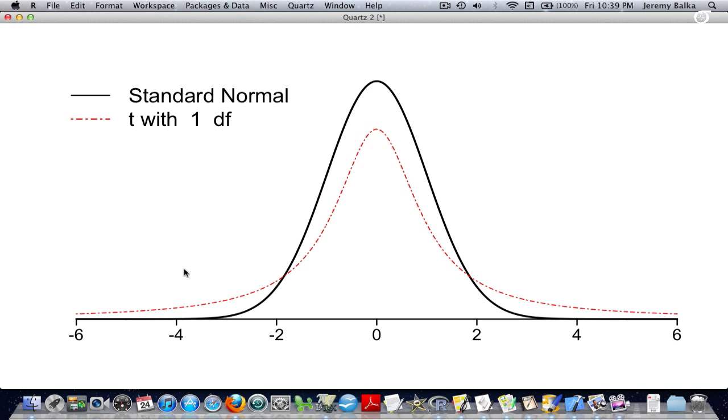Here we have a t distribution with one degree of freedom and a standard normal distribution. Now you'll note the extra variability in the t distribution, the extra area in the tails and the shorter peak. But as we let those degrees of freedom increase, that t distribution is tending towards our standard normal distribution, getting closer and closer. There's still greater area in the tails, there's still a shorter peak, but as the degrees of freedom increase, it's getting closer and closer to the standard normal distribution.